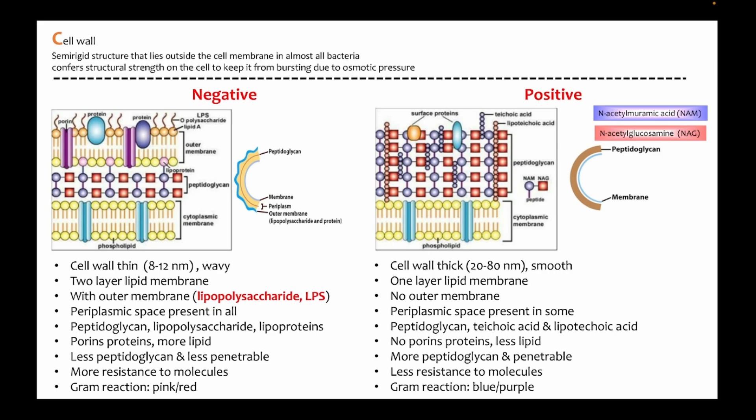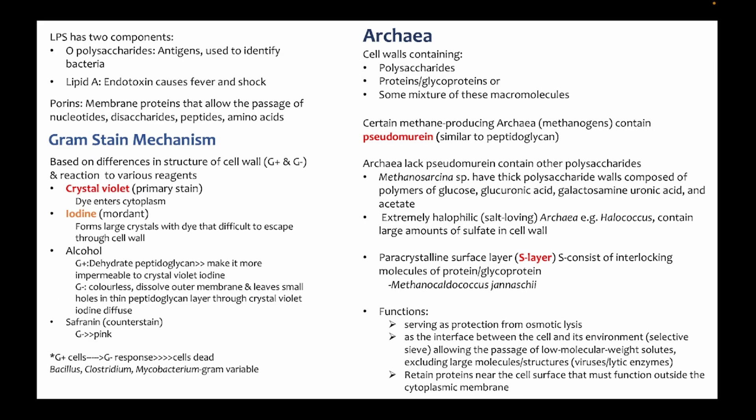The final counter-staining step with safranine does not work on gram-positive bacteria because they are already purple — adding red does not change the color. For gram-negative bacteria, which are colorless after decolorization, they then stain red with safranine. Key differences: gram-positive has thicker peptidoglycan and teichoic acids; gram-negative has lipopolysaccharides. The LPS is antigenic — it is the LPS region that often causes our immune system's reaction to bacterial infection, including fever and shock.